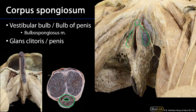Covering the bulb of the penis we have the bulbospongiosus muscle, which we can see here. Over here the bulbospongiosus muscle has been removed so that we can see the vestibular bulbs, but that muscle would lie just superficial to the vestibular bulbs. The bulbospongiosus muscle helps to apply pressure to the vestibular bulbs and to the bulb of the penis.